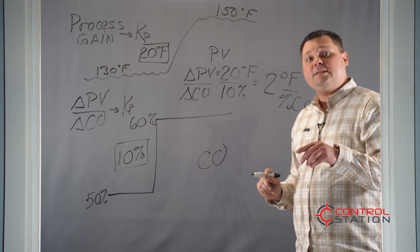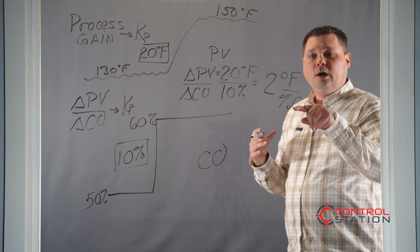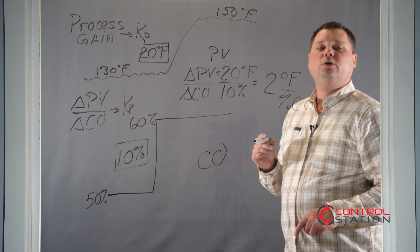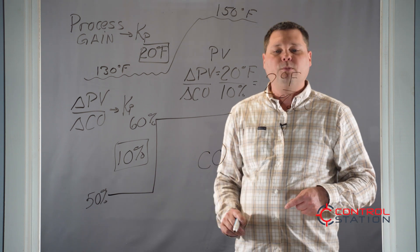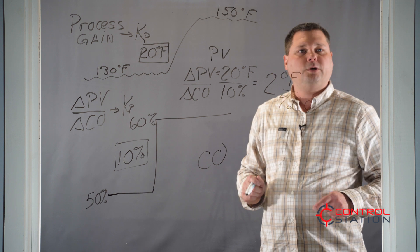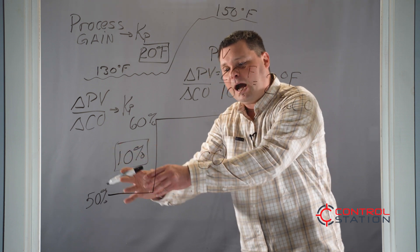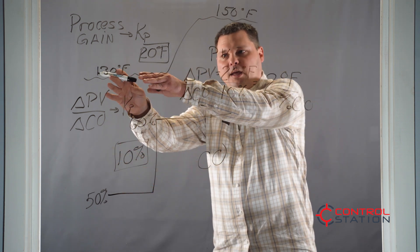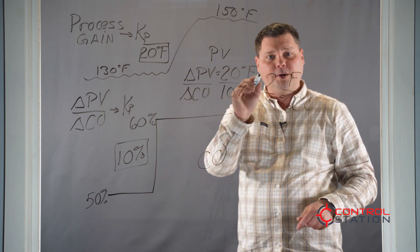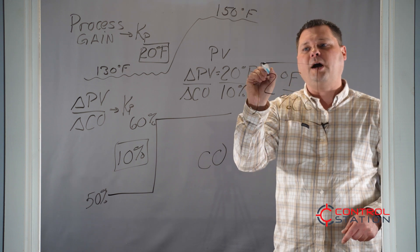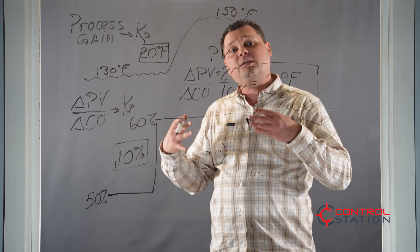What that means is that for every 1 percent we open our control valve — or our pump or whatever it is — our temperature is going to increase by 2 degrees Fahrenheit. It gives us the sensitivity, the how far. So we take the data for how far the controller output was moved, divide the process variable change by the controller output change, and we get our process gain. This tells us how sensitive the process variable is to changes in the output.